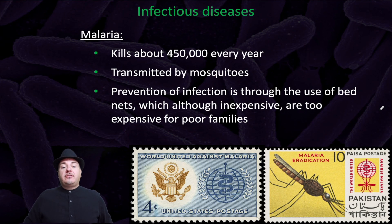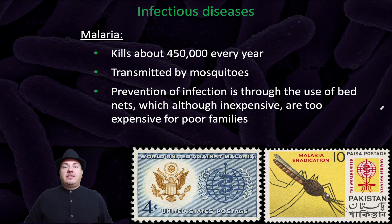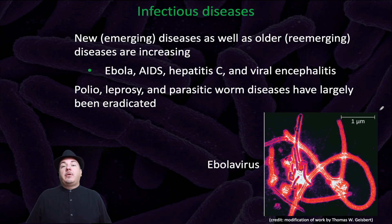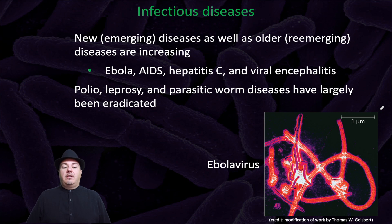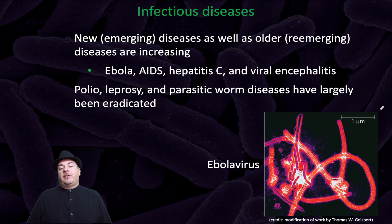Some examples of infectious diseases: malaria kills about 450,000 people every year. It's transmitted by mosquitoes, but the cause of the disease is a microorganism. We also have new emerging diseases, as well as older re-emerging diseases which are increasing — things like Ebola, AIDS, Hepatitis C, and viral encephalitis. Meanwhile, polio, leprosy, and parasitic worm disease have largely been eradicated.